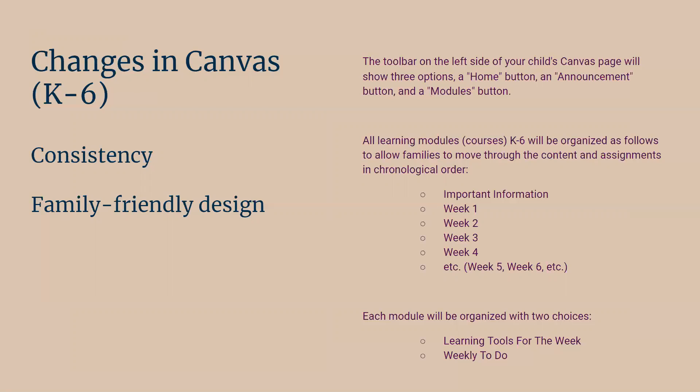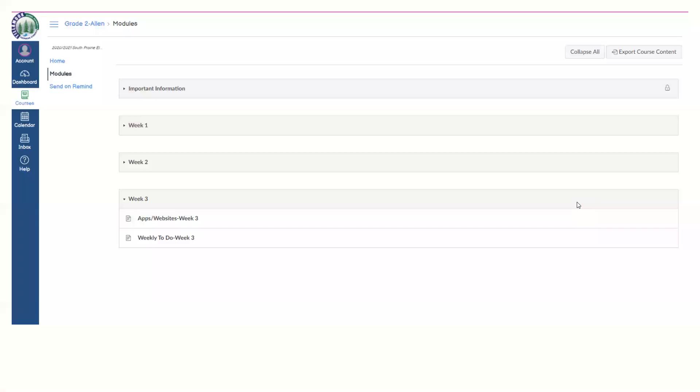At the very top of your child's Canvas once they click into their modules, the Important Information module will be the first one they see. Then it'll go week by week in chronological order. Part of that is for ease of navigation and alignment — it's nice to see the current week, but it gets confusing when you're navigating using the Next button and end up in a previous week you didn't intend to be in. You'll also see that each module will be organized with two choices: Learning Tools for the week and a Weekly To-Do.